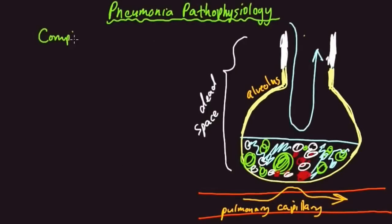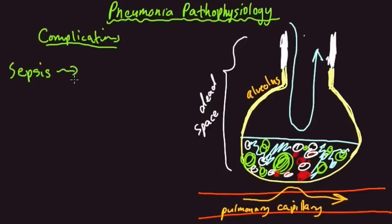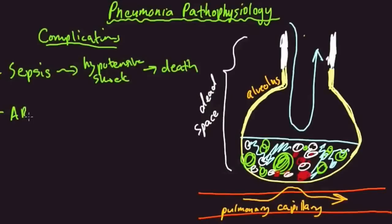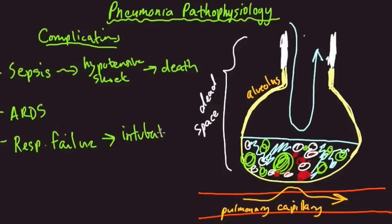What are some complications patients can experience with pneumonia? Left untreated, pneumonia can lead to sepsis — a more widely disseminated infection and inflammatory response within the body. Sepsis leads to hypotensive shock, which if untreated will lead to the patient dying. Another complication is ARDS — acute respiratory distress syndrome. You can also have general respiratory failure requiring mechanical ventilation and intubation, and necrosis of the lung tissue, where parts of the lung actually die off.